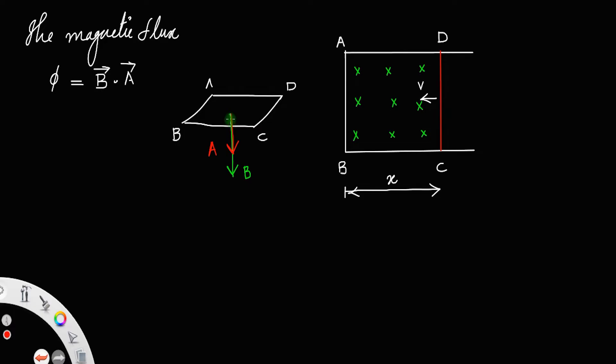Clearly here, this red one is the area vector and that green one is the magnetic field. Both are directed into the plane of paper.